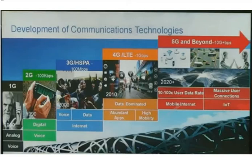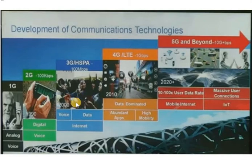We earlier saw the difference between 2G and 1G networks. The main difference is that the 2G network is digital while the 1G network was analog, and there was much less capacity in the 1G network. The 2G network also supported data connectivity but at much less speed. The 3G network then came to support much better voice quality as well as higher data rates.